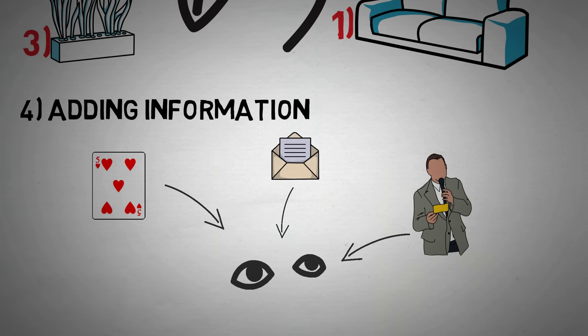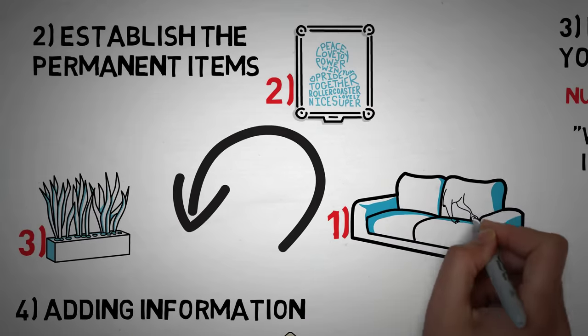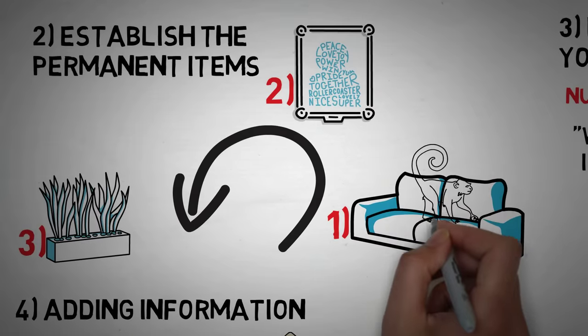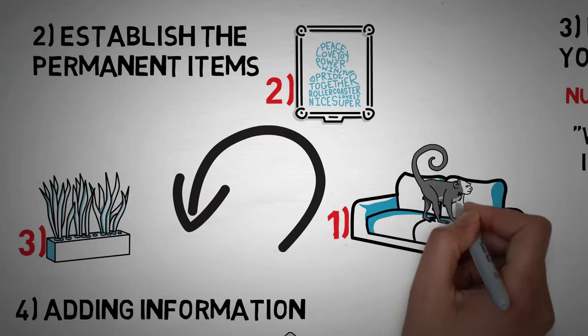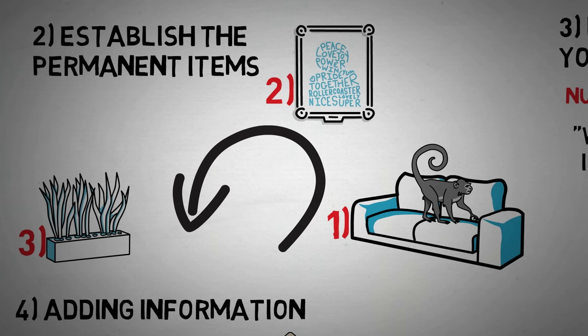Say you were memorizing a deck of cards, and the first card is an Ace of Hearts. Well, you would then take the image you have created for an Ace of Hearts and associate it with your first item in your first room. So for mine, the Ace of Hearts is represented by a monkey with a bright red bum going crazy. It sounds insane, but it's visual and memorable.